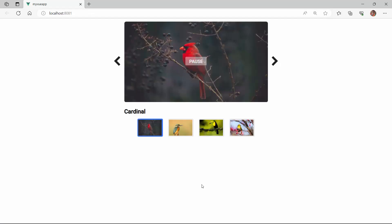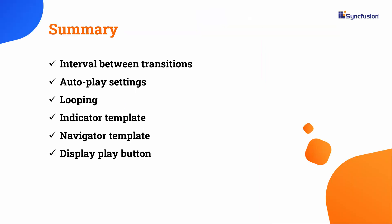In this video, you have seen how to customize the time interval between slide transitions, autoplay, and looping in the carousel component. You have also seen how to customize the indicator and navigator buttons using a template, and how to display the play button for the slideshow. If you would like to see the working example used in this video, you can download it from the GitHub link in the description below. I have also provided a link where you can see if you qualify for a free license key to use our view products through our community license. If you found this video useful, don't forget to click the like button and subscribe to our channel. Thanks for watching.